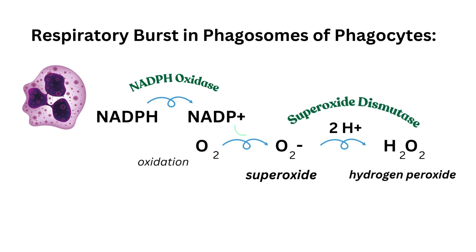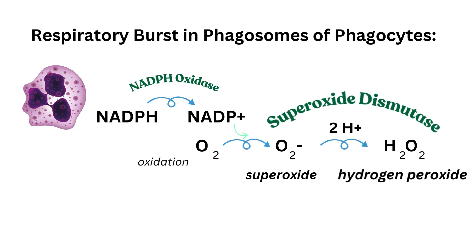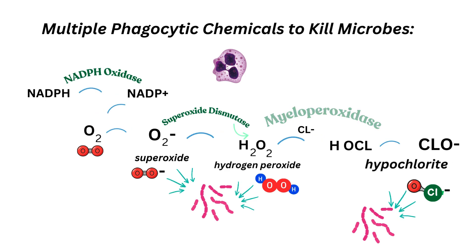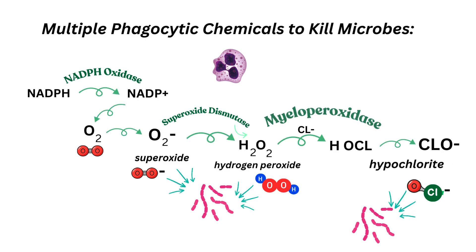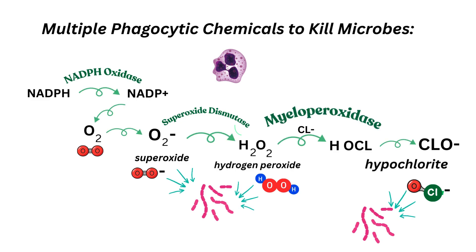Next, superoxide dismutase enzyme converts superoxide into hydrogen peroxide by adding two hydrogen atoms. Finally, myeloperoxidase enzyme in azurophilic granules of neutrophils, and to a lesser extent in monocytes and macrophages, combines a chloride anion with hydrogen peroxide to form hypochlorite, which is similar to bleach and is another microbe-killing chemical.